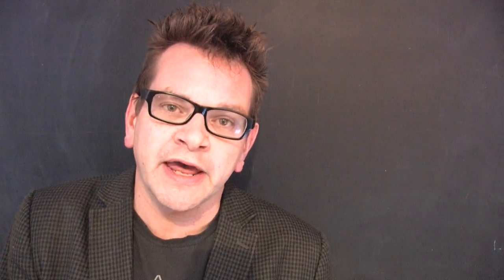So the words are quite simple. You can look at them on the wall right now. 'The right of citizens of the United States to vote shall not be denied or abridged by the United States or by any state on account of sex. Congress shall have the power to enforce this article by appropriate legislation.' That's the words we're going to lead up to, which is an exact replica of the 15th Amendment — the right of black males to vote — except race, we're substituting sex.